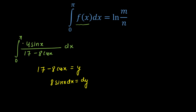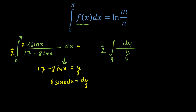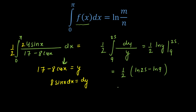To get 8 sin(x) in the numerator, I'll multiply and divide by 2, giving (1/2) times the integral of dy/y. Adjusting the limits: when x = 0, cos(x) = 1, so y = 17 − 8 = 9; when x = π, cos(x) = −1, so y = 17 + 8 = 25. Integrating 1/y gives ln(y), so we get (1/2)[ln 25 − ln 9] = (1/2) ln(25/9), which simplifies to ln(5/3).